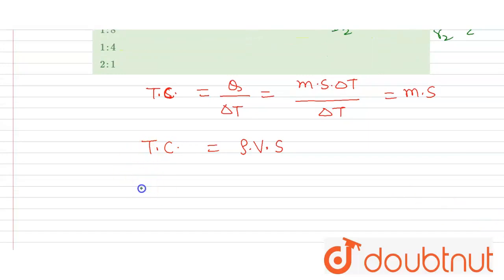the thermal capacity TC₁ will be equal to ρ into volume, into volume is 4/3 π r₁³ into s. And for the second substance it will be ρ into 4/3 π r₂³ into s.